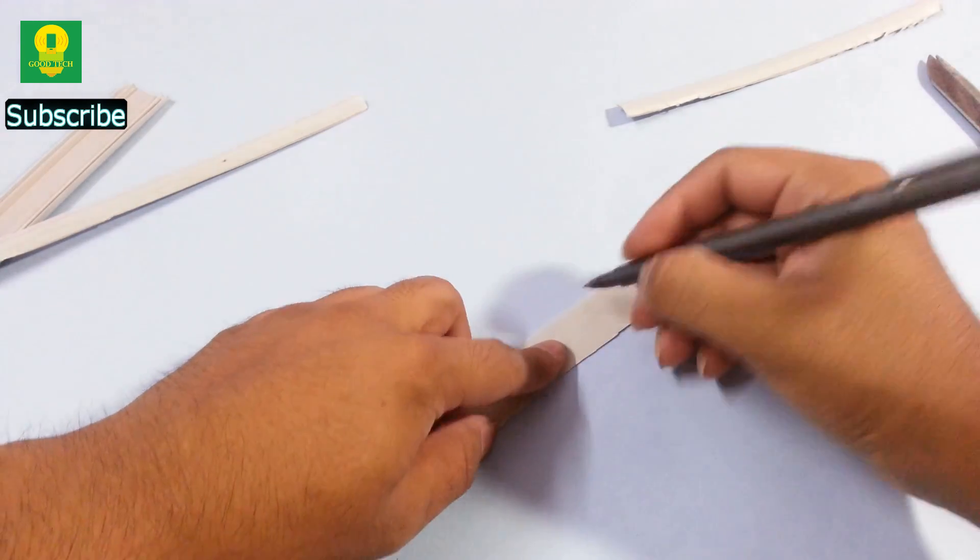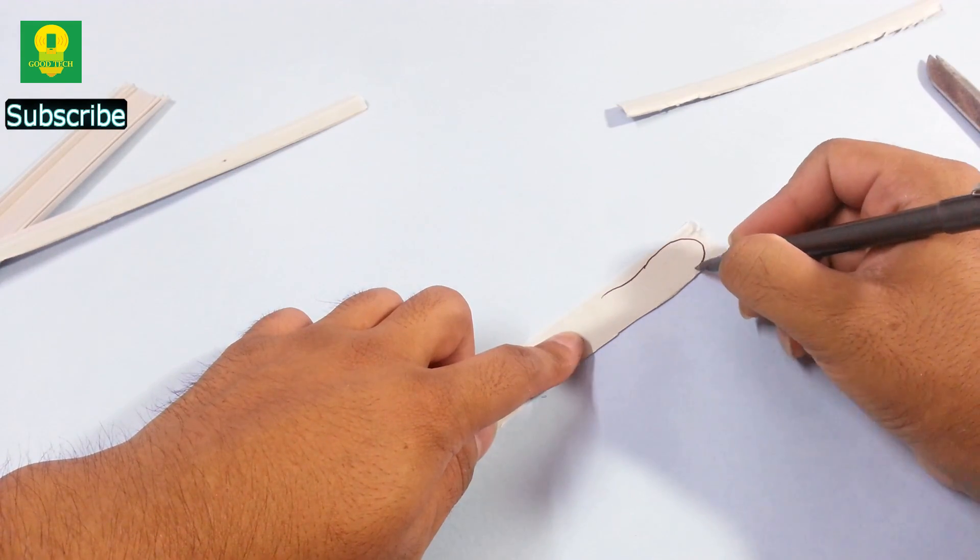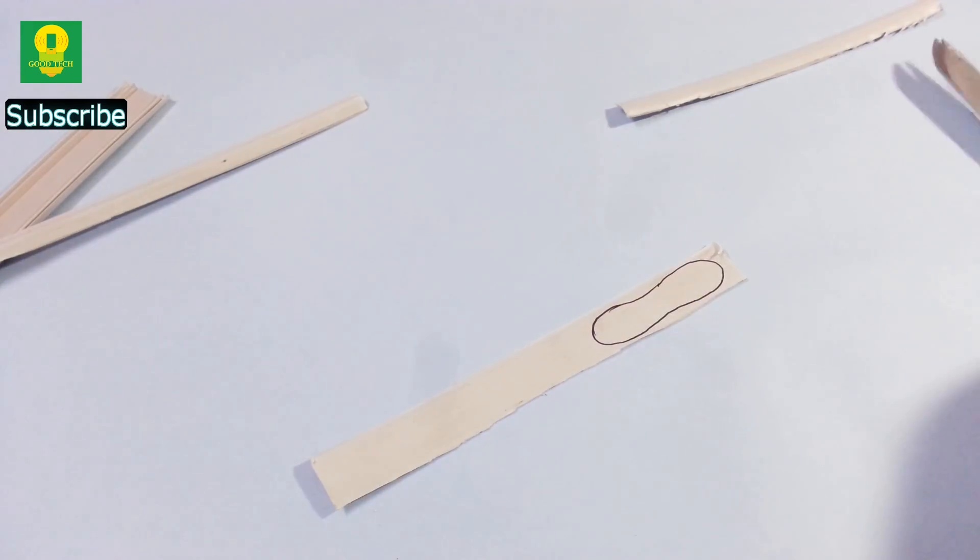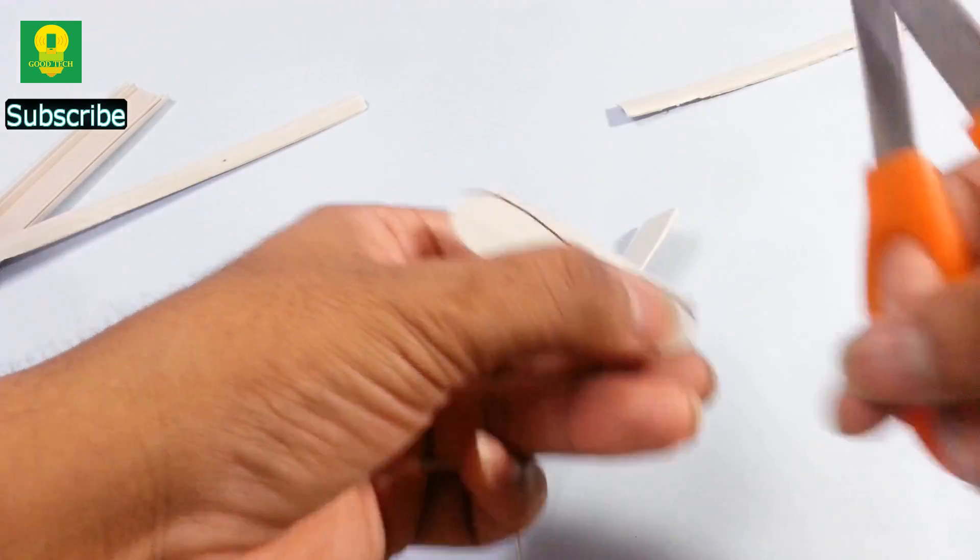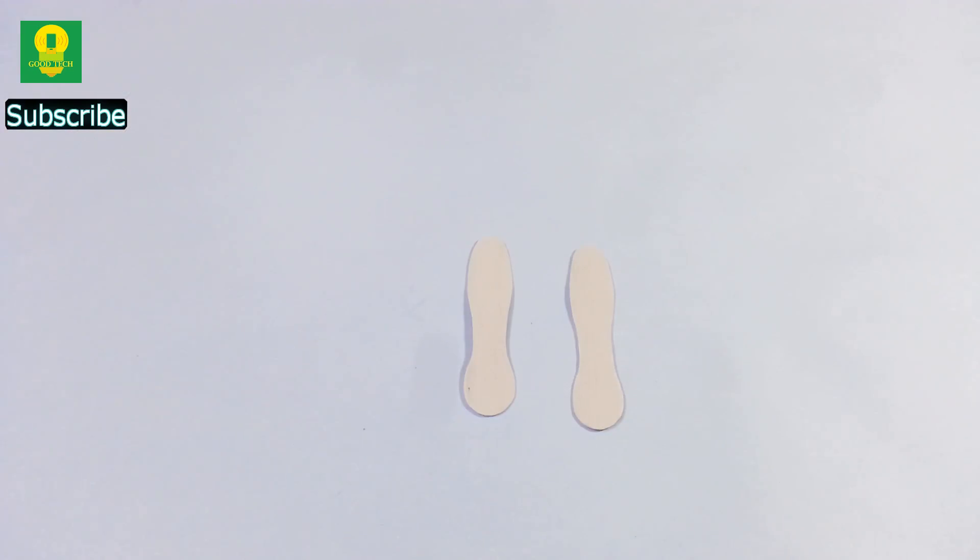Using a marker, draw a large peanut shape on the strip. Cut the strip and make two exactly similar pieces.